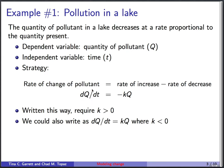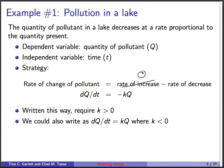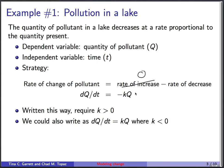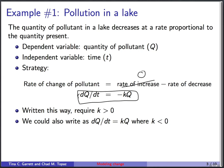We have rate of increase minus rate of decrease. There's nothing in the verbal description saying the pollutant is increasing, so the rate of increase is zero. The rate of decrease is proportional to the quantity present, and proportionality means a constant times, so we write minus kQ. This is our differential equation. The unknown constant of proportionality k has to be a positive number.